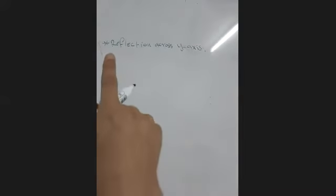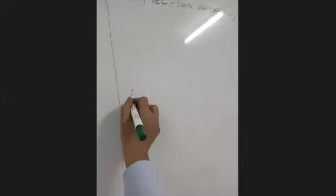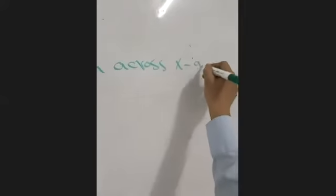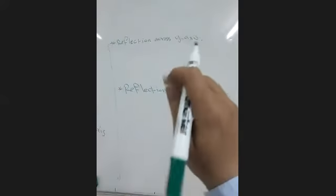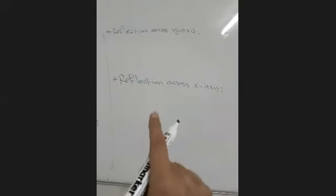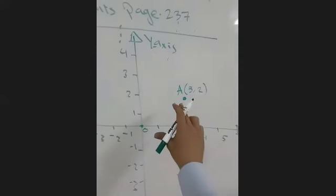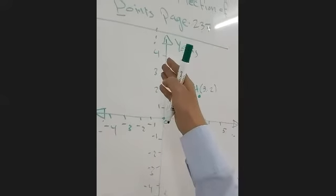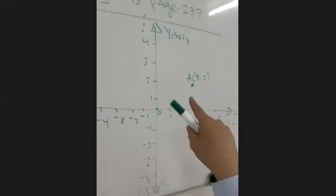The first type is reflection across the y-axis, and the second type is reflection across the x-axis. Each type has its own formula. If I want the reflection across the y-axis, the image appears on the opposite side of the y-axis. If I want the reflection across the x-axis, the image appears on the opposite side of the x-axis.